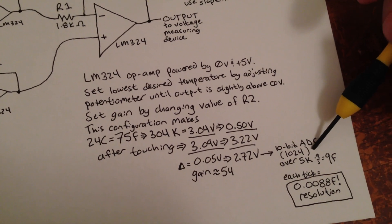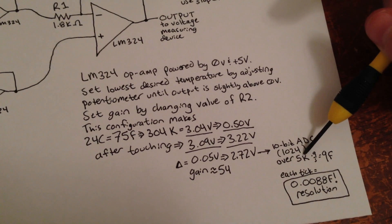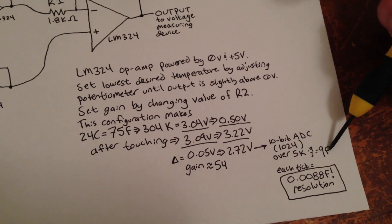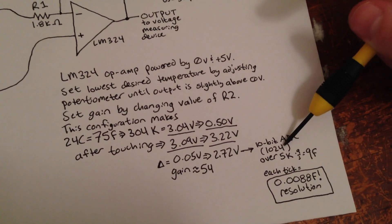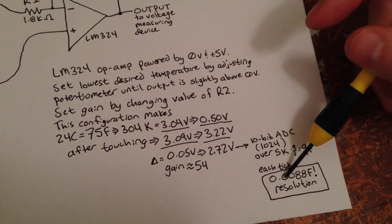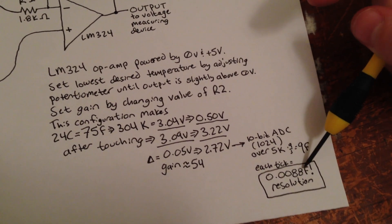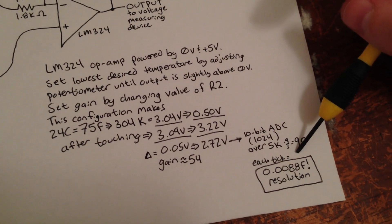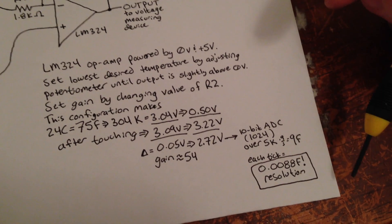With my 10-bit analog-to-digital converter, a change in 5 Kelvin, which is 9 Fahrenheit, divided by this value, means that I have a resolution of 0.088 Fahrenheit. So that's less than a hundredth of a degree Fahrenheit that I can measure linearly.